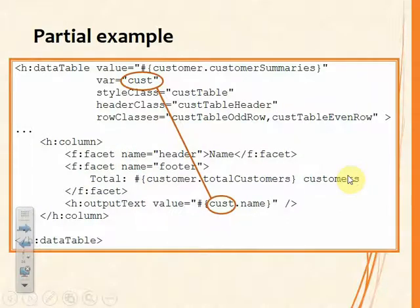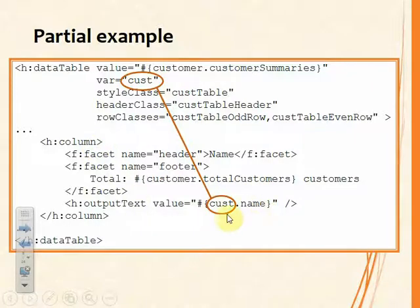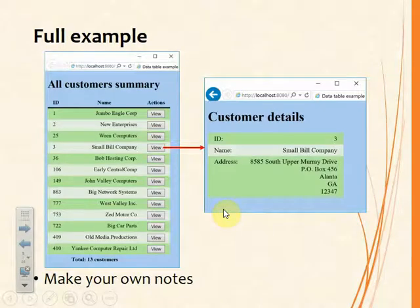The expanded version of this example illustrates the use of the var 'cust' being used down in the column element. There will be as many rows as there are objects — the first row displays the first object, the second row the second object. This involves iteration, but we do not write that iteration ourselves. That's part of the lifecycle and the framework. We're just taking advantage of what the framework does on our behalf.